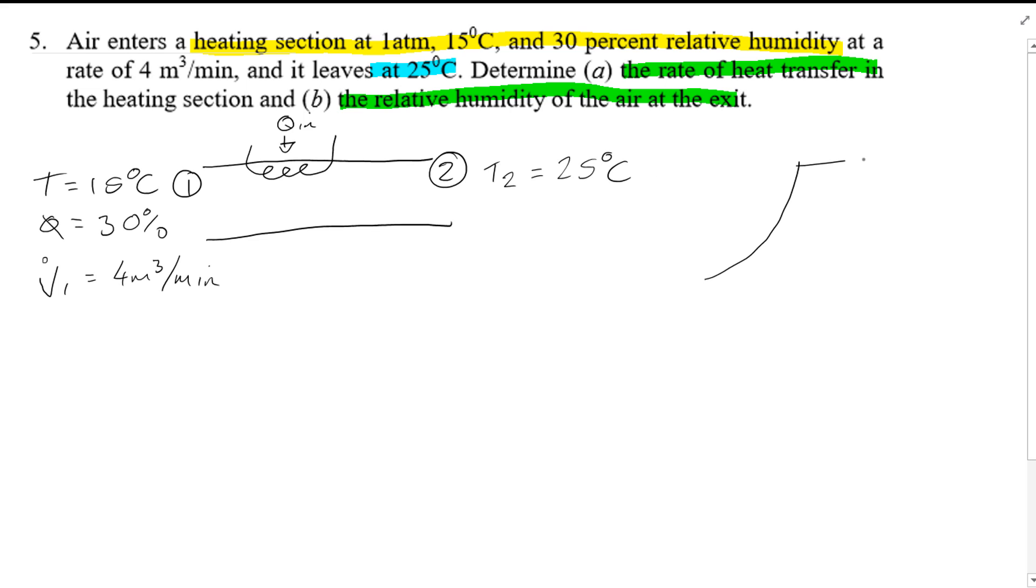Now if we look at this on the chart, if you remember from the notes, we actually know that during a simple heating process, the specific humidity remains constant. So we have a straight line from here. W is the same. This is T1, 15 degrees C, and this is T2, 25 degrees C.